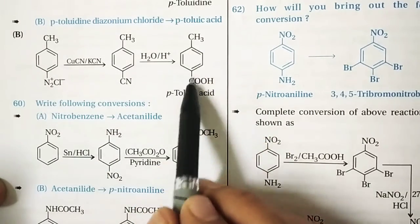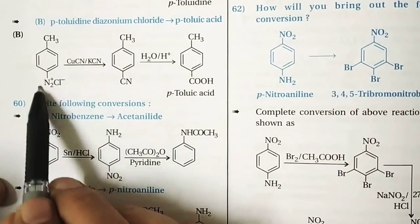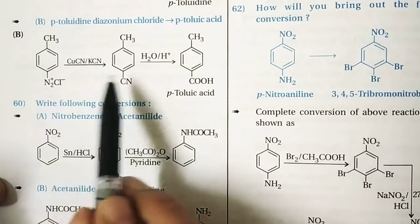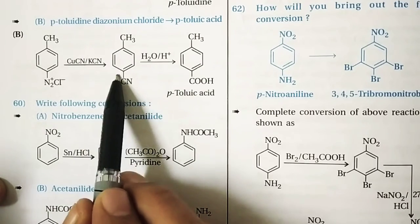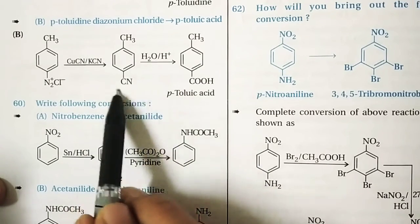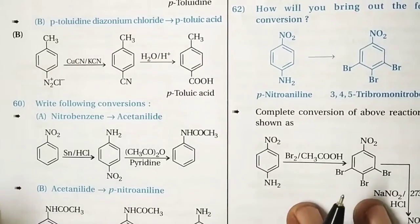Question 59 (conversion 2): Convert paratoluidine benzene diazonium chloride to paratoluidic acid. The diazonium group is replaced using KCN via the Sandmeyer reaction to introduce a C≡N group, followed by hydrolysis of the nitrile to give the carboxylic acid (–COOH).